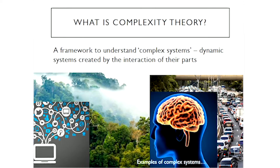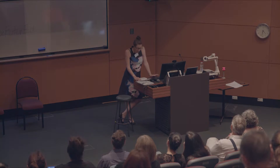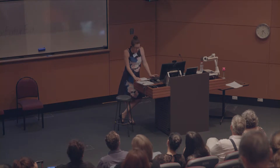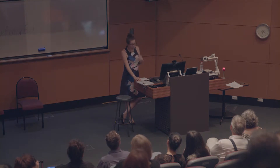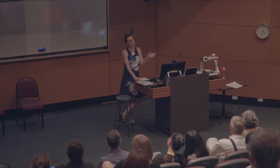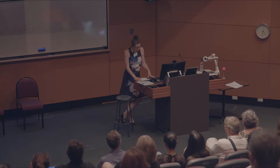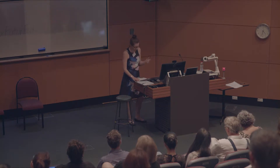Complexity theory gives us a way into understanding this ongoing change. It is the study of complex systems — I've got some examples of systems there on the screen. Complexity theory is a framework that recognizes the way interactions create and sustain open dynamic systems. The most important acknowledgement is that complex systems are generated and sustained by their interactions, by the way those parts interact. So it's a complete shift away from looking at systems as organized and controlled by a leader figure. Because of this, complexity theory is useful for understanding biological, social, and also educational systems.